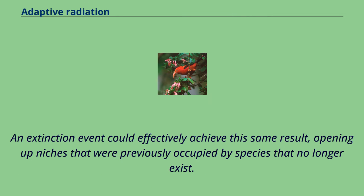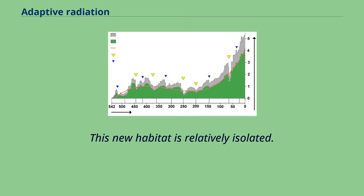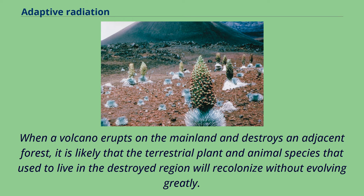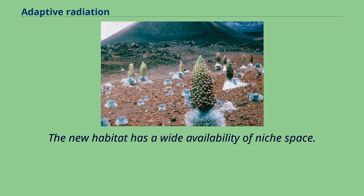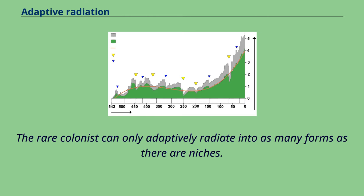An extinction event could effectively achieve this same result, opening up niches that were previously occupied by species that no longer exist. This new habitat is relatively isolated. When a volcano erupts on the mainland and destroys an adjacent forest, it is likely that the terrestrial plant and animal species that used to live in the destroyed region will recolonize without evolving greatly. However, if a newly formed habitat is isolated, the species that colonize it will likely be somewhat random and uncommon arrivals. The new habitat has a wide availability of niche space, and the rare colonists can only adaptively radiate into as many forms as there are niches.